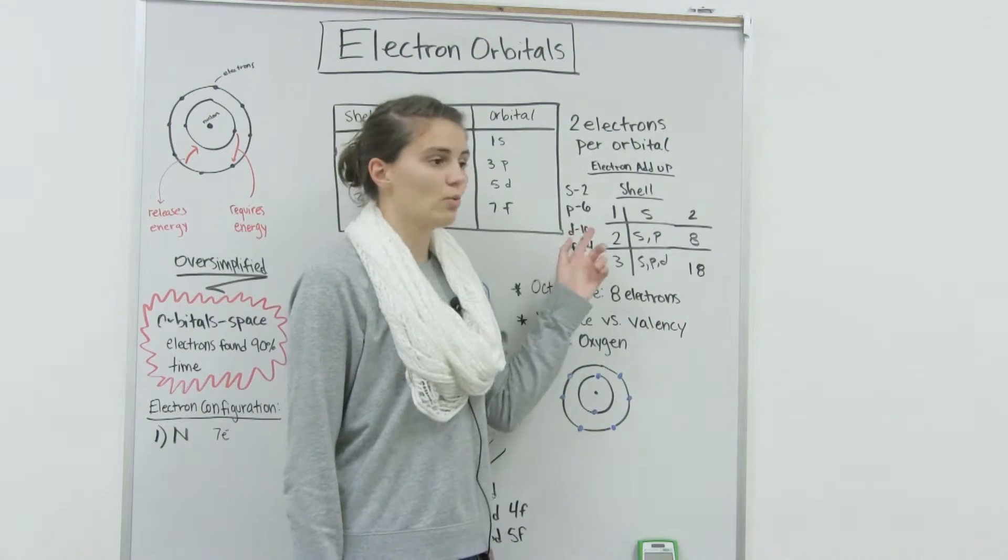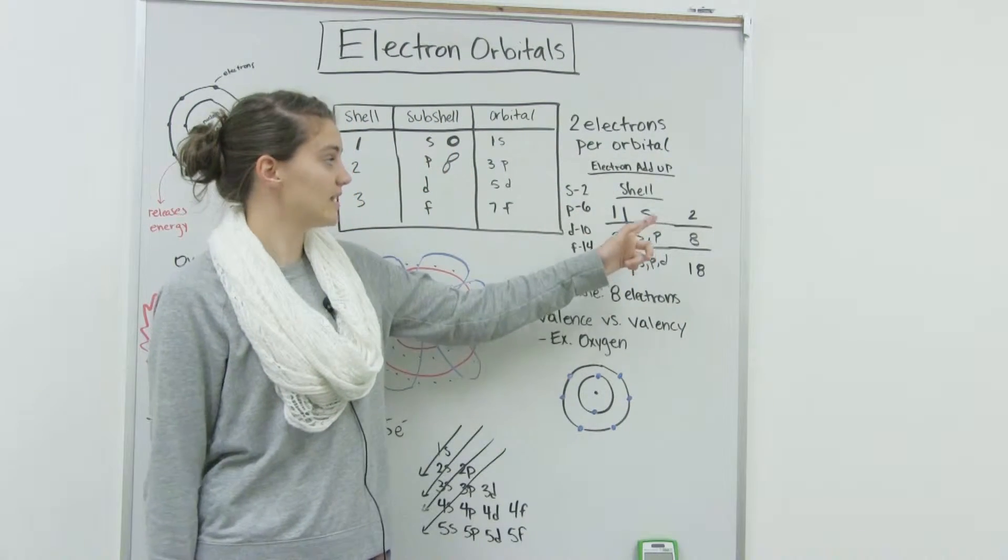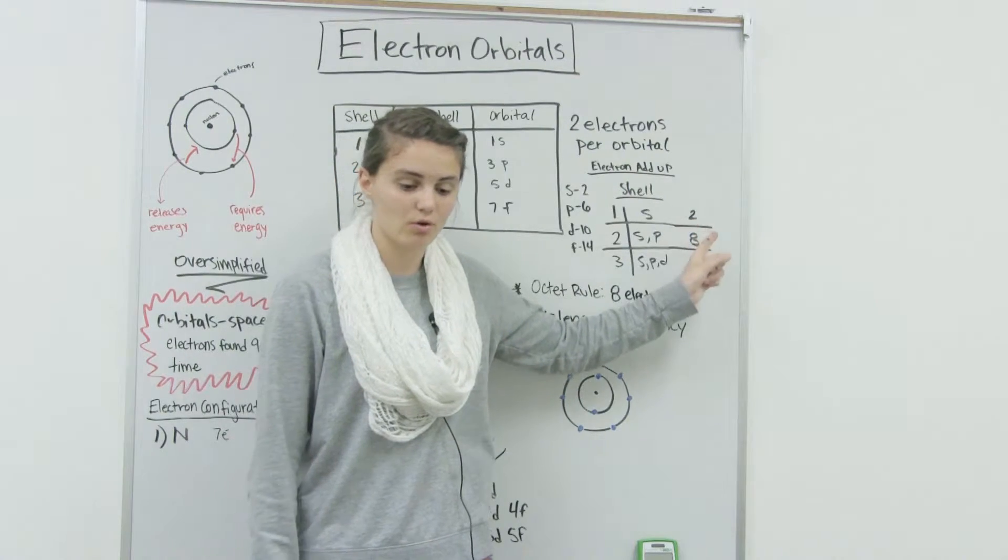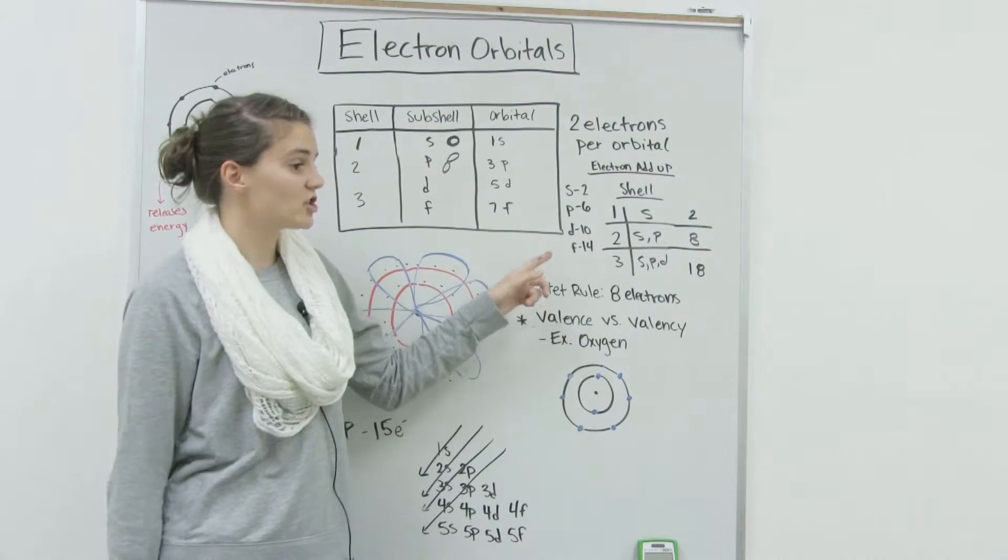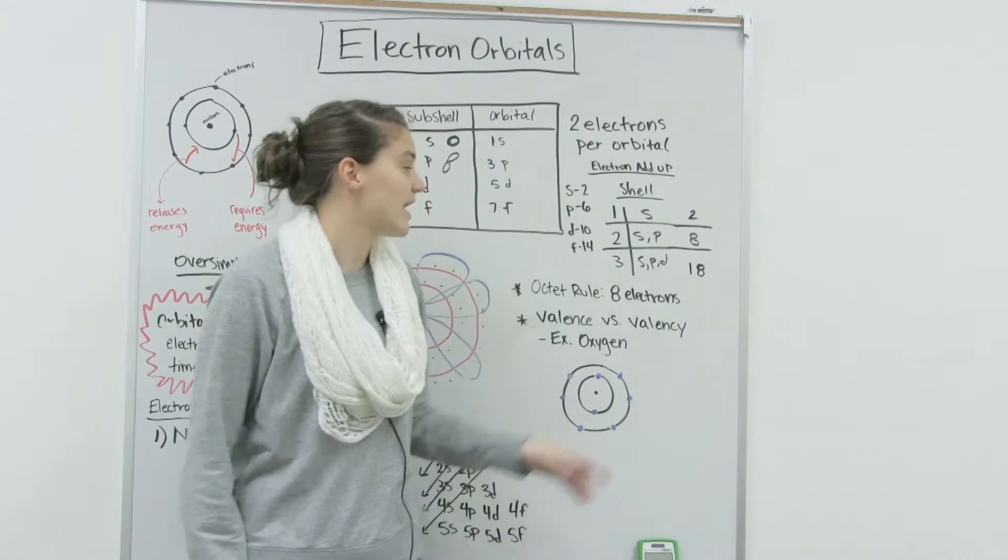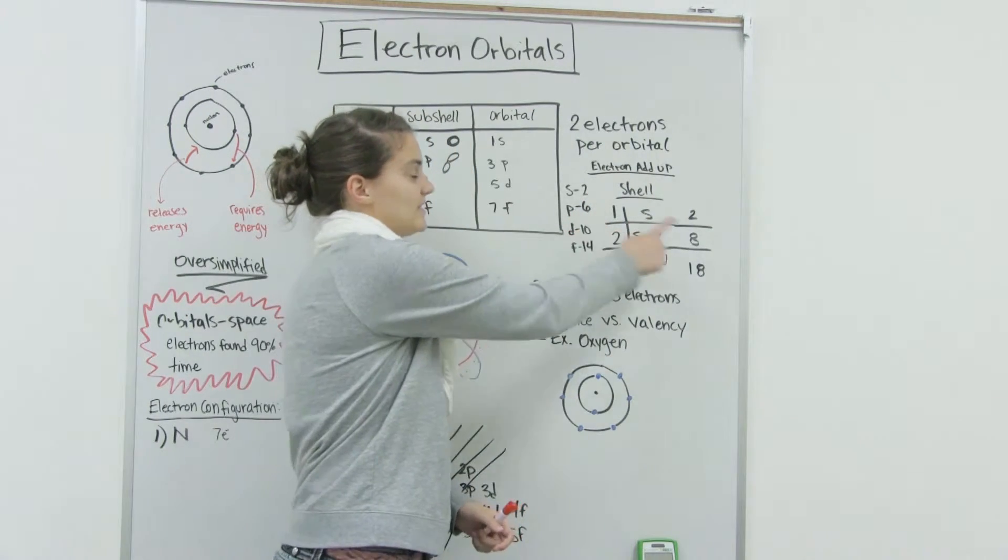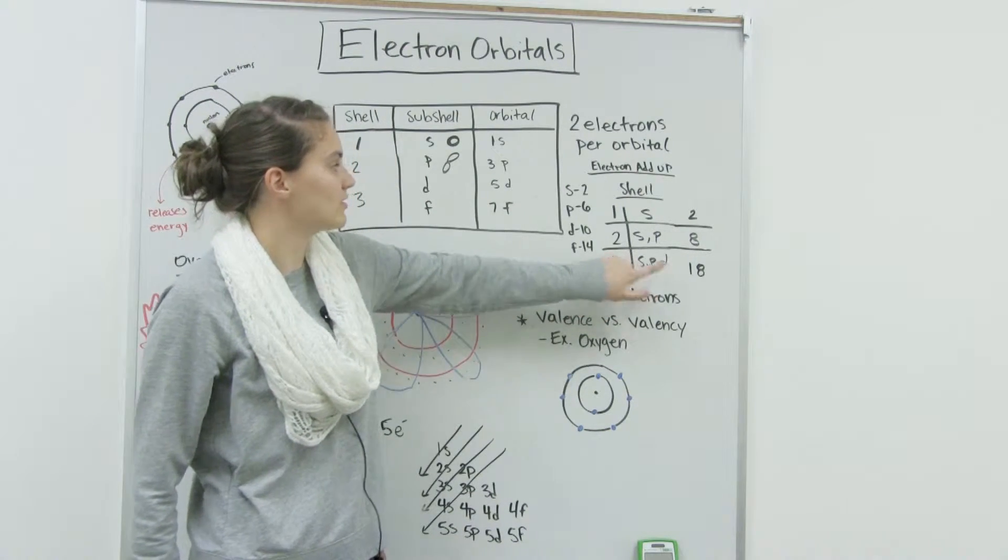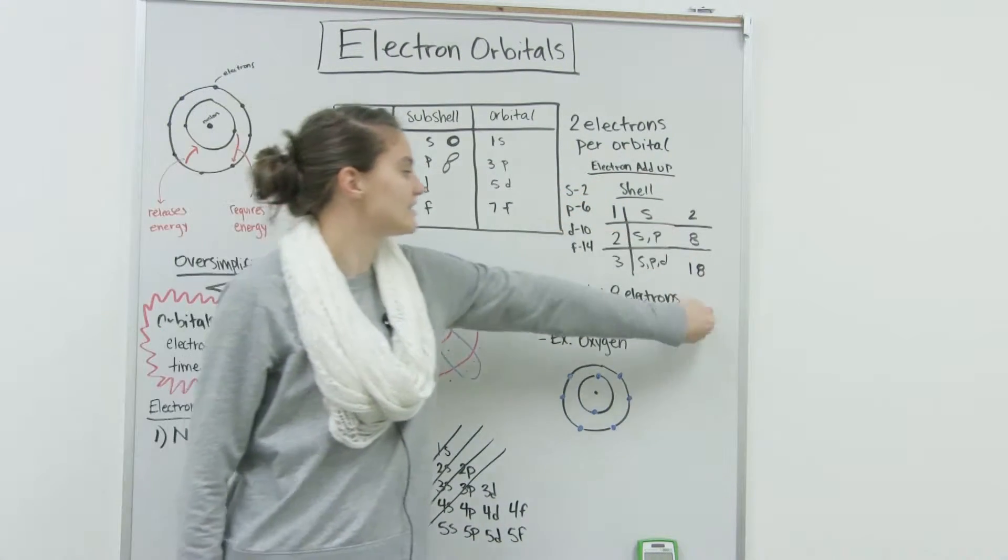So that means if we add them up, we talked earlier, the first shell only contains an S orbital. So there can only be two electrons total in the first shell. The second shell contains S and P orbitals. And so we know that two plus six is eight. And then the third shell contains S, P and D orbitals. So two plus six plus 10 is 18.